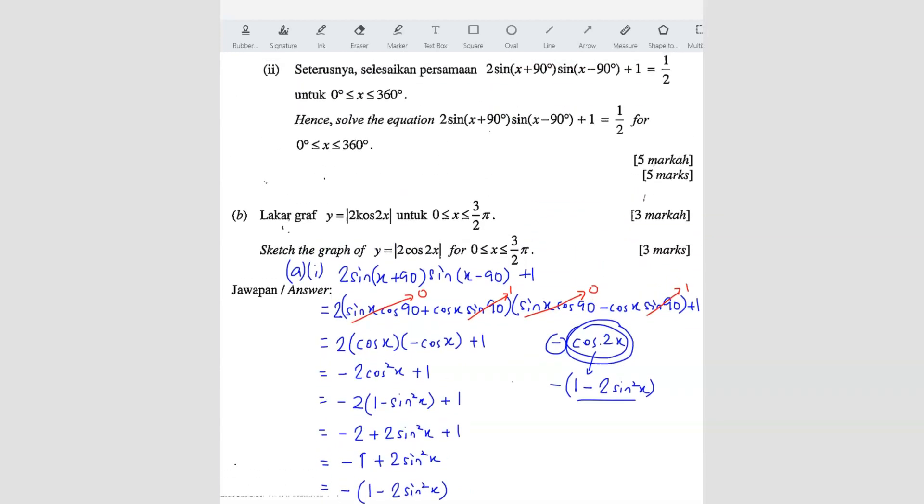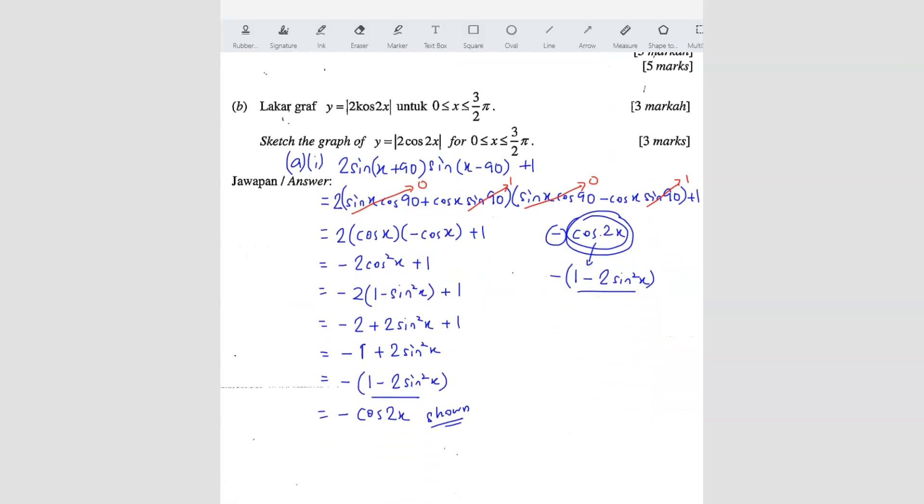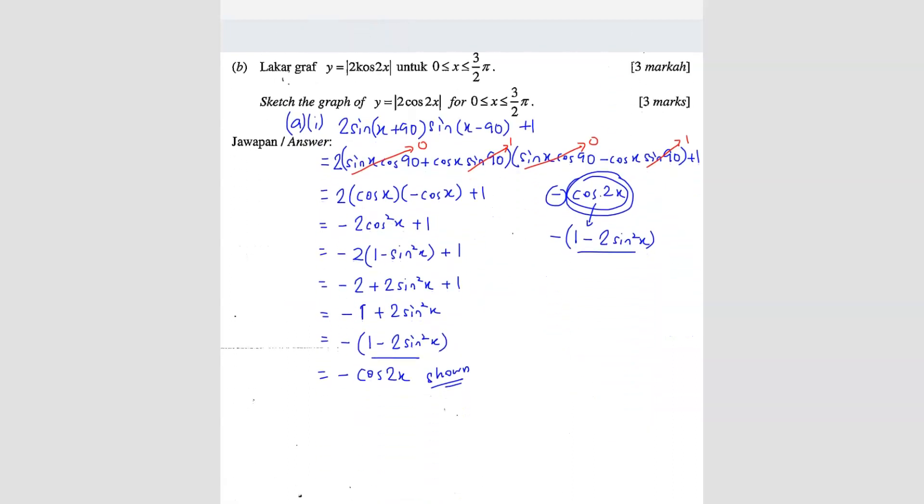So that's the first part. Next, what they ask? Hence, solve this equals to 1 over 2. So this one is basically this. We have already found that this is equals to -cos(2x). So -cos(2x) equals to 1 over 2. So we write here, number 2. So -cos(2x) equals to 1 over 2. So that means cos(2x) equals to -1 over 2, is -0.5.